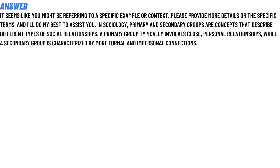In sociology, primary and secondary groups are concepts that describe different types of social relationships. Primary groups typically involve close, personal relationships, while a secondary group is characterized by more formal and impersonal interactions. That is the answer to the question.